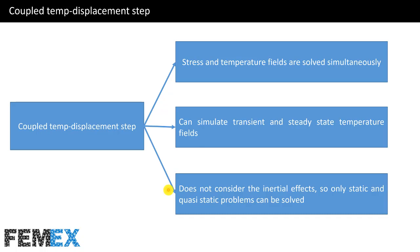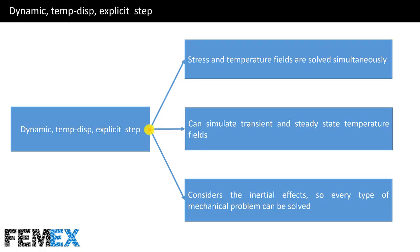The coupled temp displacement step does not consider inertial effects, so only static and quasi-static problems can be solved. In the dynamic temp explicit step, stress and temperature fields are solved simultaneously, and this step can simulate transient and steady-state temperature fields. This step considers inertial effects, so every type of mechanical problem can be solved.